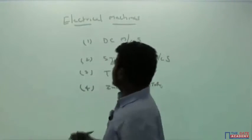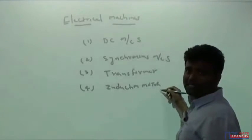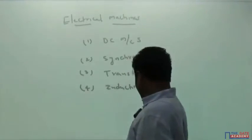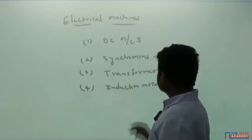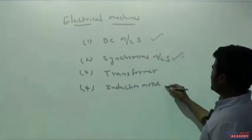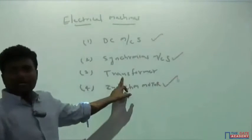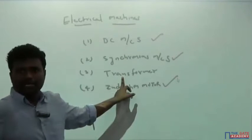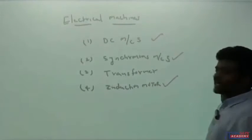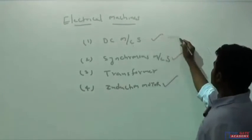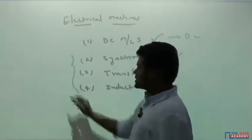DC machines, synchronous machines, and induction motors — topics 1, 2, and 4 — are rotating machines. The transformer, which is a static piece, is stationary and won't rotate. Looking at AC and DC classification: DC machines are DC, and the remaining topics 2, 3, and 4 work on AC.